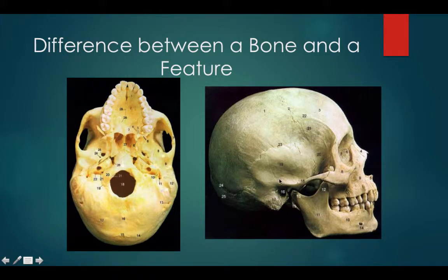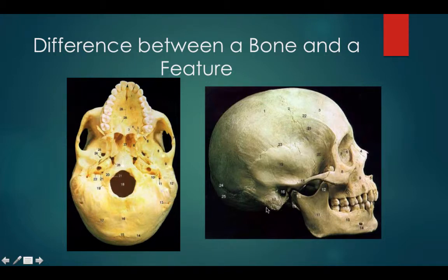Here on the right-hand side we have a lateral view of the skull. Here again is the temporal bone, and then this would be the zygomatic process of the temporal bone. Also, this is the mastoid process of the temporal bone. Let's look at some more pictures and see if we can clear this up.